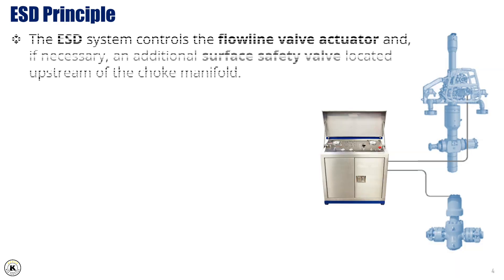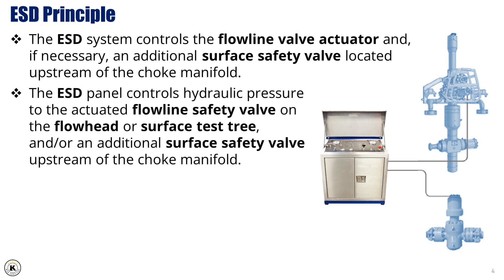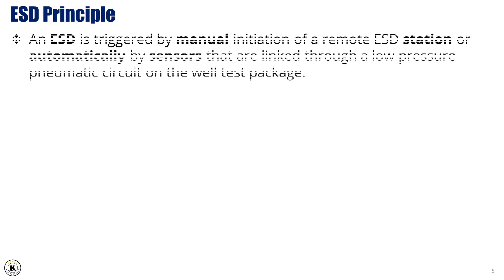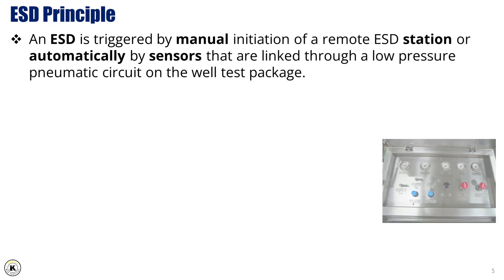ESD principle: The ESD system controls the flowline valve actuator and, if necessary, an additional surface safety valve located upstream of the choke manifold. The ESD panel controls hydraulic pressure to the actuated flowline safety valve on the flowhead or surface test tree, and an additional surface safety valve upstream of the choke manifold. An ESD is triggered by manual initiation of a remote ESD station, or automatically by sensors linked through a low-pressure pneumatic circuit on the well test package.